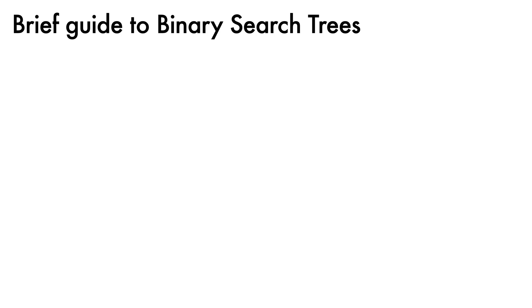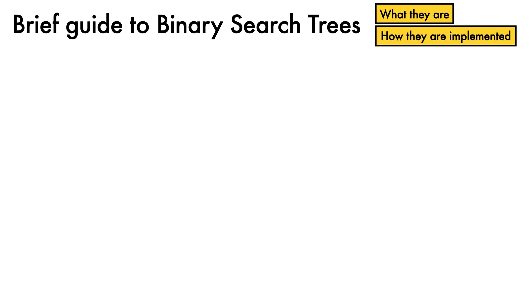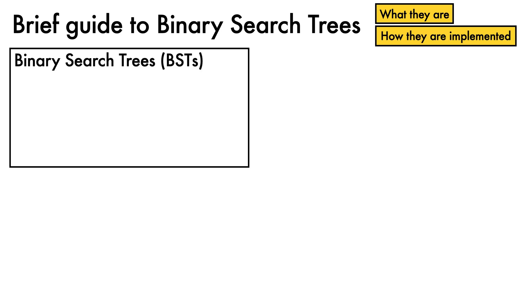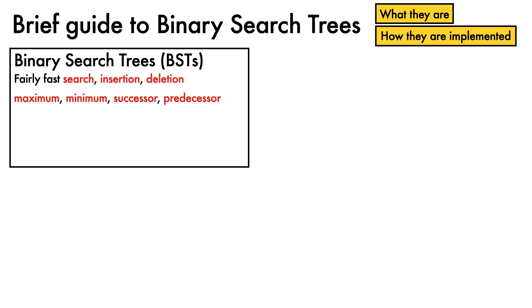This video aims to provide a brief guide to binary search trees, exploring what they are and how they are implemented. Binary search trees, or BSTs, are data structures that support fairly fast search, insertion, and deletion, in addition to maximum, minimum, successor, and predecessor operations.